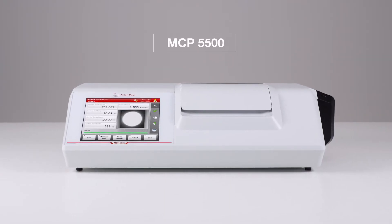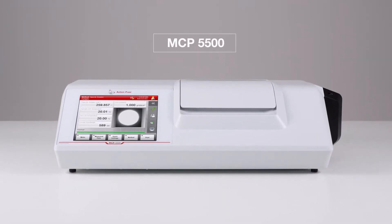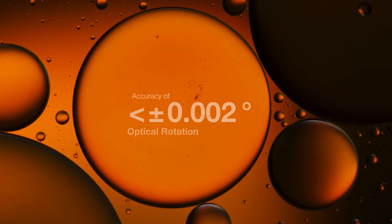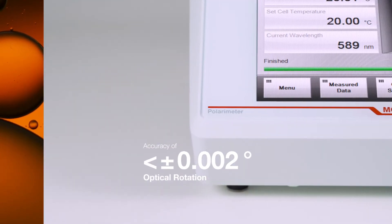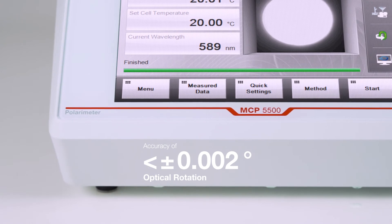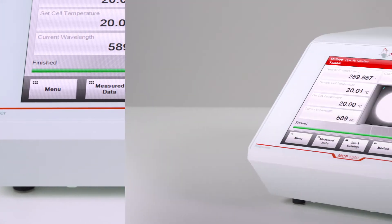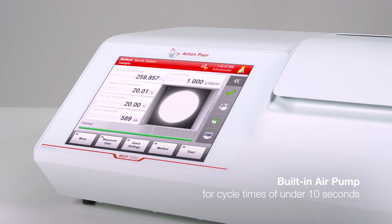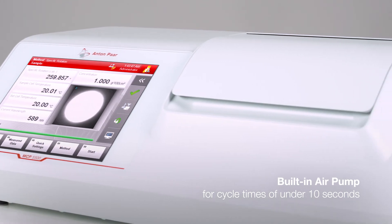Measurement heavyweight MCP 5500 spots the smallest impurities and material changes, delivering supreme accuracy across the full measurement range. The built-in air pump dries cells to further reduce cycle times to under 10 seconds.